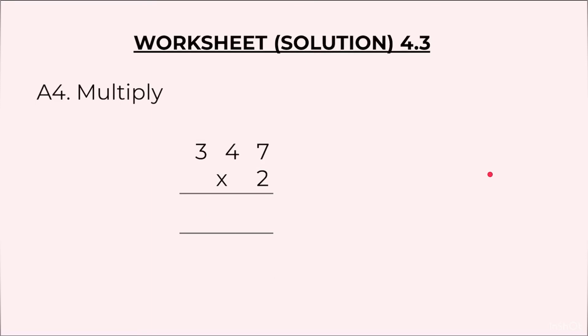Question 4: 347 into 2. 2 into 7, 14, 1 at the top, 4 at the bottom. 2 into 4, 8 plus 1, 9. 2 into 3, 6. Final answer is 694.